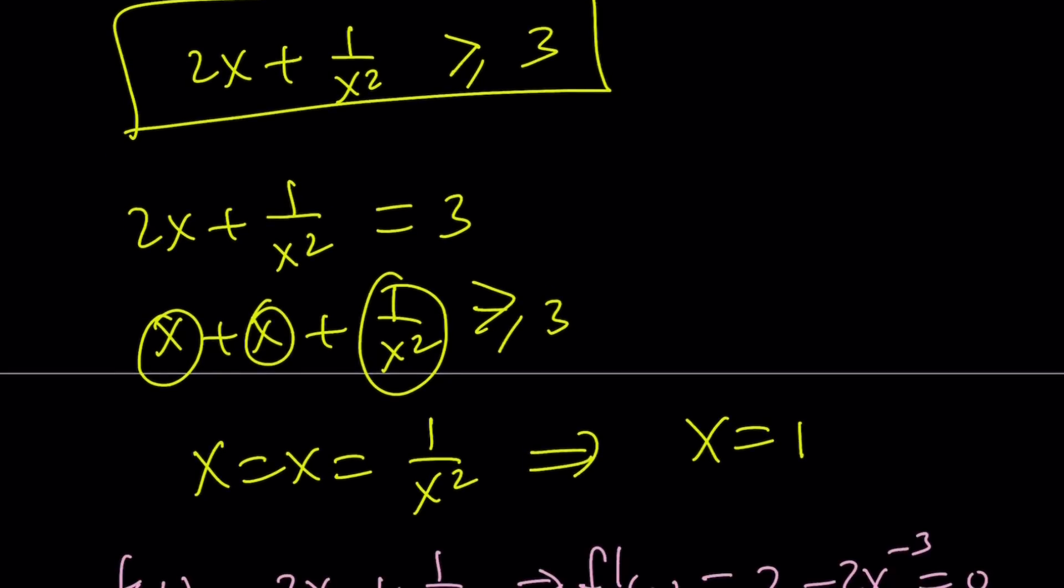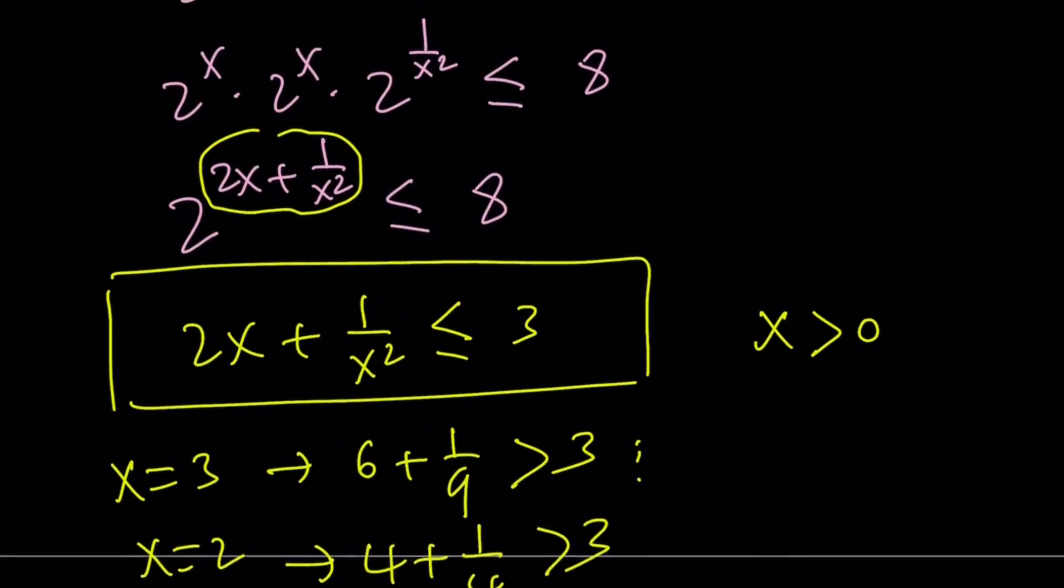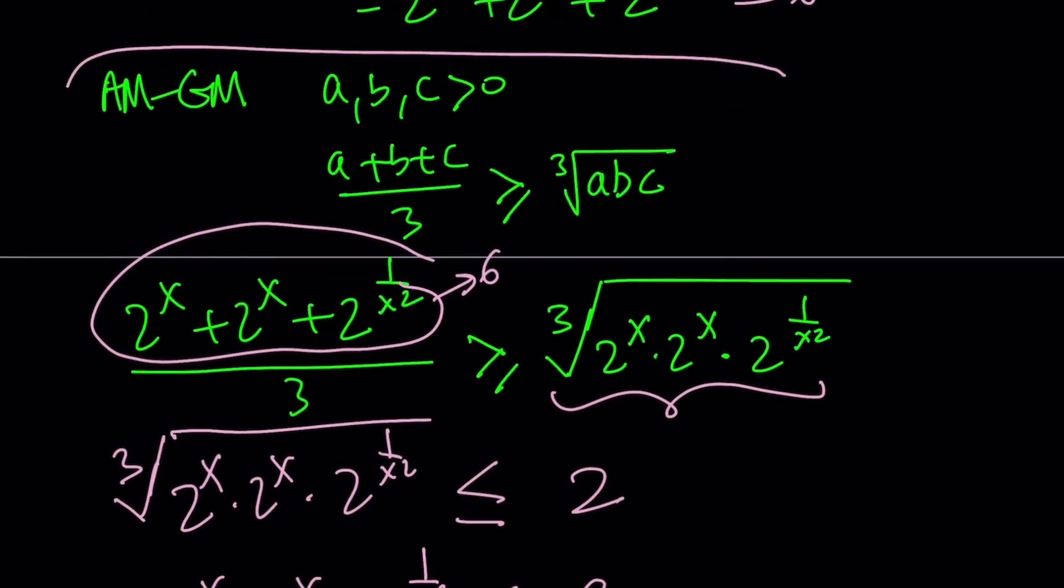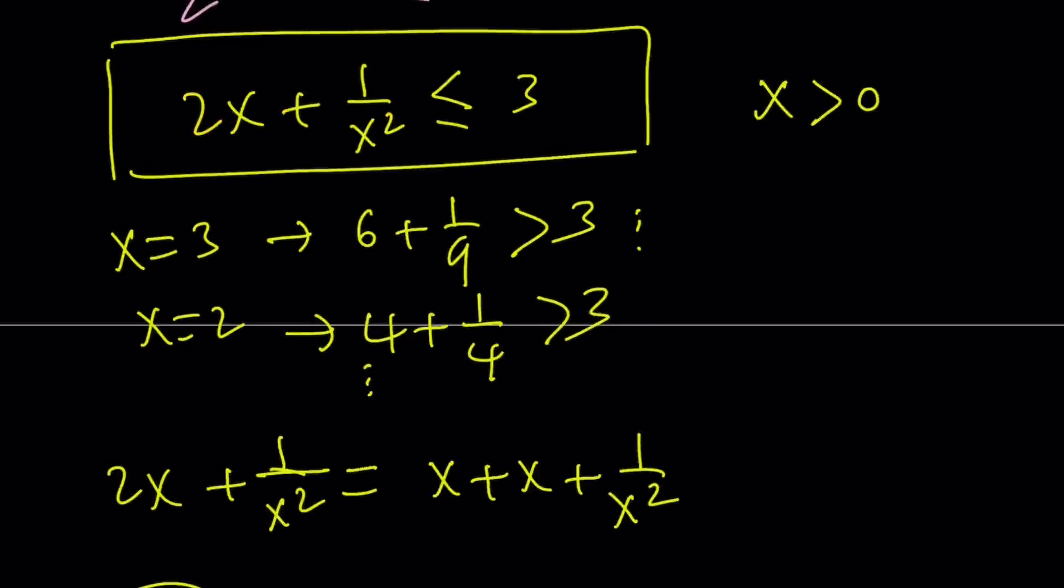Of course, we're only talking about positive solutions here. Make sense? So we use the AM-GM twice. And AM-GM with three numbers is basically the arithmetic mean of three numbers is always greater than or equal to their geometric mean. When those two means are equal, that means a, b, c are all equal to each other.